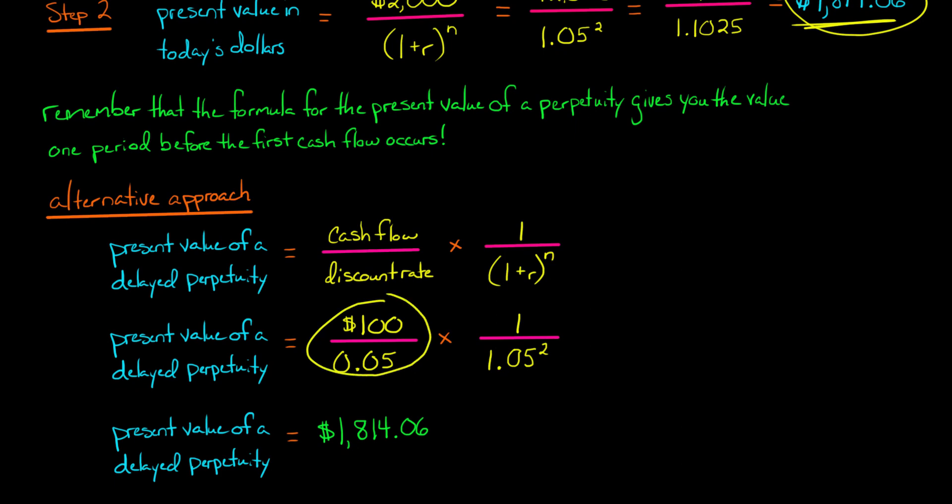So we'd have 100 divided by 0.05, which we already saw was $2,000. Multiply that by one over 1.05 squared, and that will give you the same answer that we had before. $1,814.06 is the value of this delayed perpetuity in today's dollars.